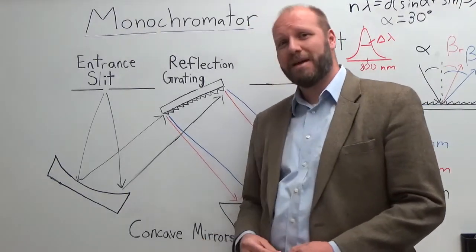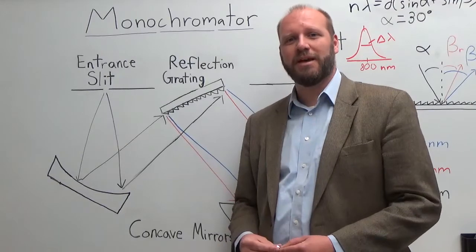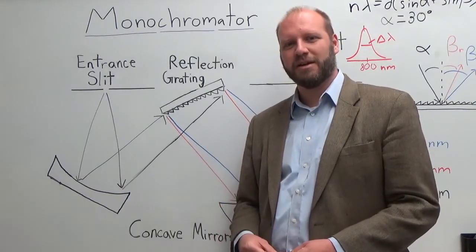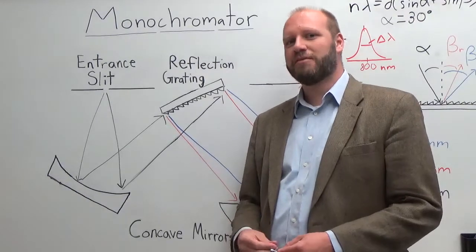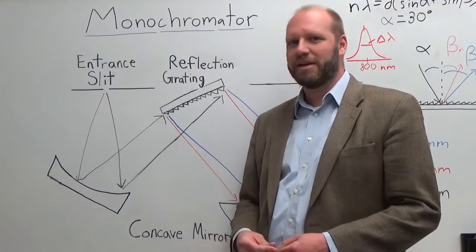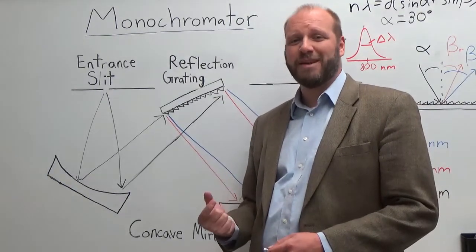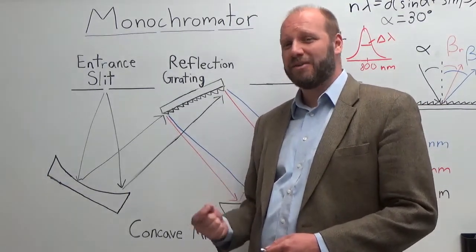This is important because when you make chemical measurements, oftentimes we use light to study the interaction of light with matter or the chemical system we're studying. That typically is a function of the color of light that hits it, the wavelength of light that hits it. So we need to be able to control in a precise manner what wavelength of light, the color of light that's interacting with our sample.